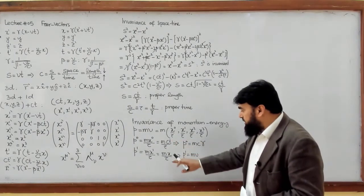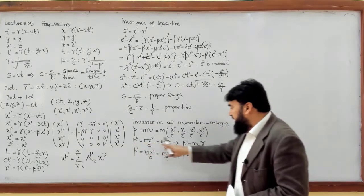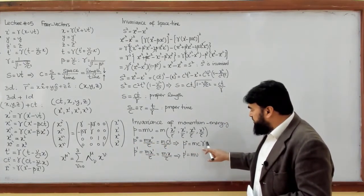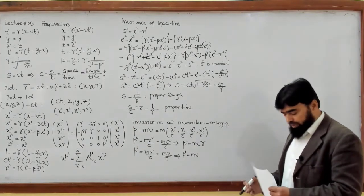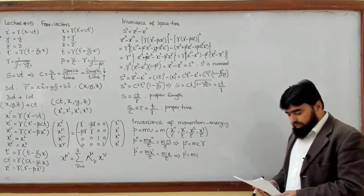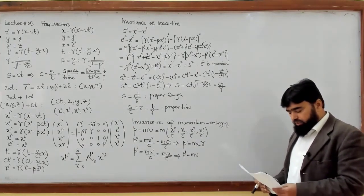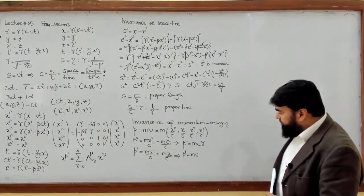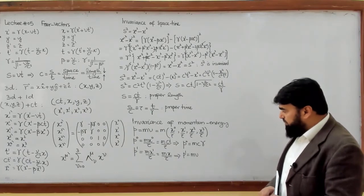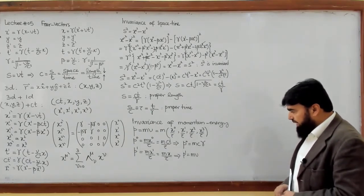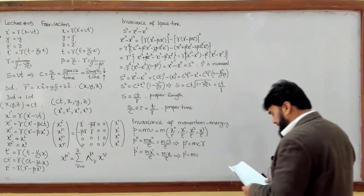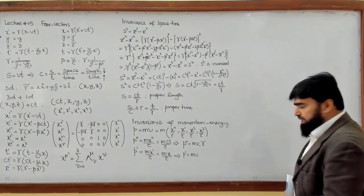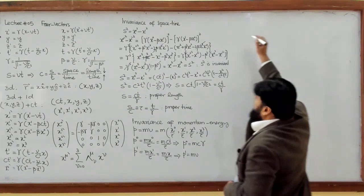So in four-dimensional space, we get an extra component of momentum, which is gamma mc, in addition to the usual three-dimensional momentum mv. I can further explore this using the binomial series.